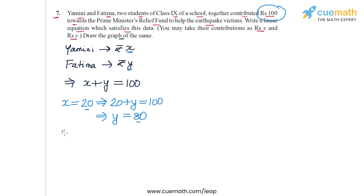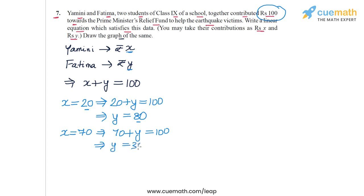Now let's take another solution. Let X equal to 70 and substitute this into the equation: 70 plus Y equals 100, so Y equals 100 minus 70, which is 30. This means that if Yamini contributed rupees 70, then Fatima contributed rupees 30.